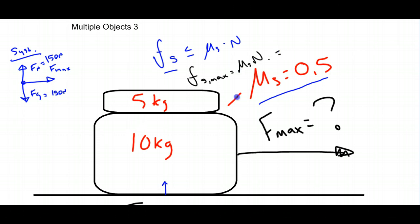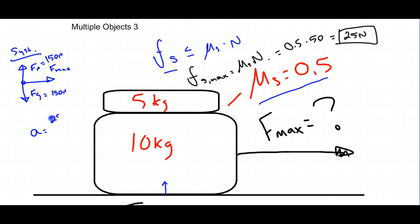The normal force on the 5 kilogram object equals its gravitational force, so Fs max equals 0.5 times 50, giving a maximum friction force of 25 newtons before it gives way. Using F equals ma, that maximum friction force corresponds to a maximum acceleration of 25 divided by 5, which is 5 meters per second squared. That's the maximum acceleration the 5 kilogram object can experience before it starts to slide to the left.